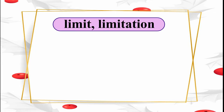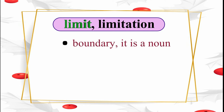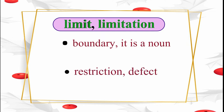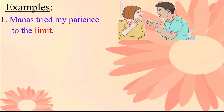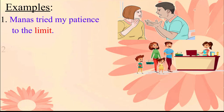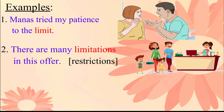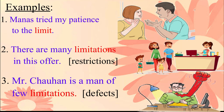You can see two words on your screen. One is 'limit' and the other is 'limitation.' The word 'limit' means boundary — it is a noun. The word 'limitation' means restriction or defect. Please repeat these sentences after me: Manas tried my patience to the limit. There are many limitations in this offer. Mr. Chauhan is a man of few limitations.